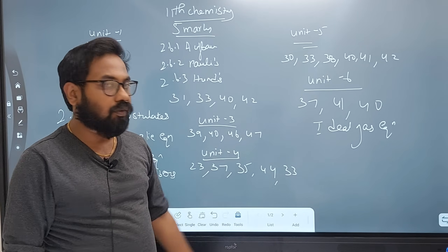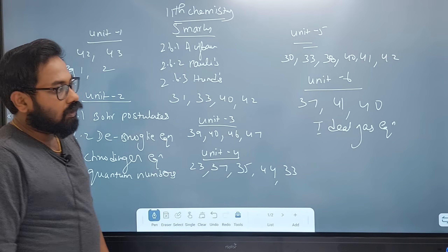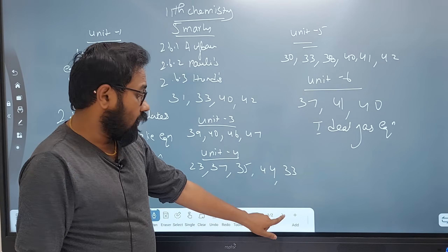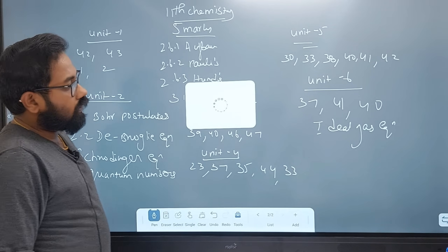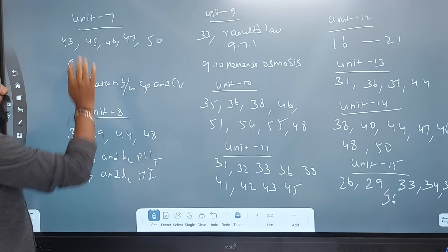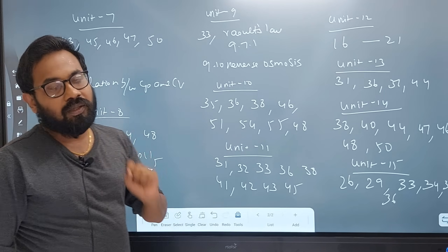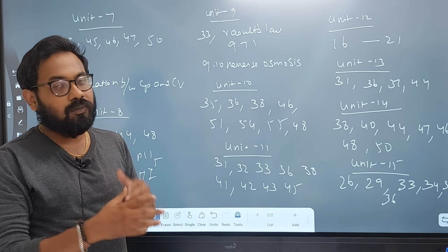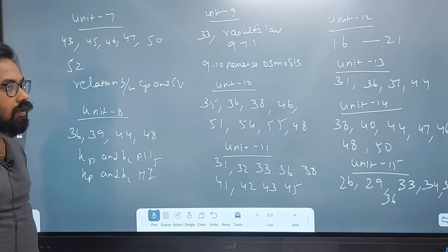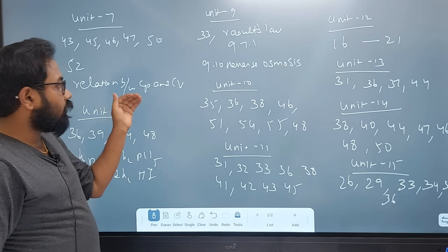In Unit 6, uses of noble gases — let's note the noble gas equation. In the case of Gibbs free energy, entropy, spontaneous reaction and spontaneity conditions — delta H and delta U — and the relation between Cp and Cv.